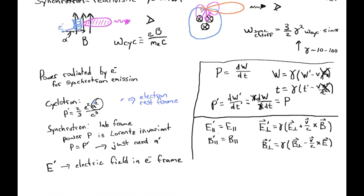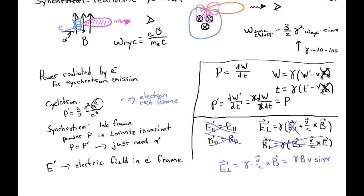Applying this to our specific case: in the lab frame there is no electric field, and we ignore the electron's own electric field. We're also not interested in the B field in the electron's frame since the electron isn't moving, so B can't cause acceleration. We're left with E' = gamma (v/c × B), where the cross product extracts the perpendicular component of B. So E' = gamma B v sine(alpha) / c, where alpha is the angle between the electron's velocity and the B field direction.